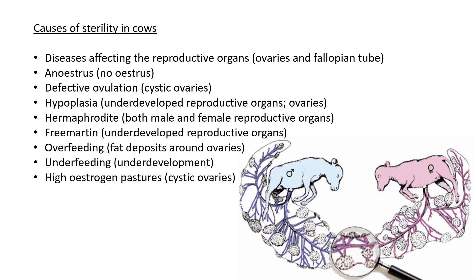Cows can also become sterile due to overfeeding — fat deposits around the ovaries themselves prevent the ovaries from functioning properly or releasing egg cells. Underfeeding can also lead to underdevelopment of the ovaries or other reproductive organs, so management of feeding is very important; both overfeeding and underfeeding are bad. Lastly, high estrogen levels in pastures can also cause cystic ovaries, as estrogen prevents ovulation from happening — high estrogen levels are very bad for the reproductive system of cows.